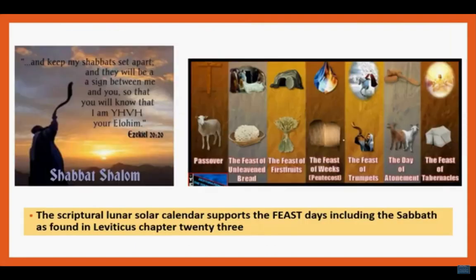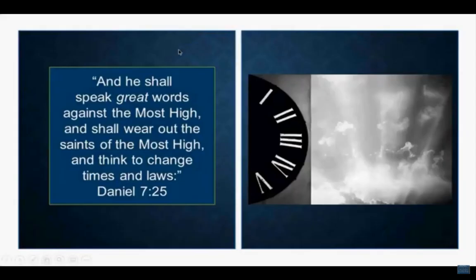The scriptural lunar-solar calendar in the Bible supports the feast days including the Sabbath, all found in Leviticus chapter 23 — go and read that chapter; it shows the Sabbath as the first feast day. Daniel 7:25 says he shall speak great words against the Most High and shall wear out the saints of the Most High, and think to change times and laws — and we are seeing those changes in the times.